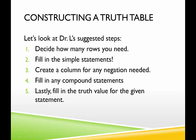If we have just one simple statement, p, we would need just two rows underneath the header — one for true and one for false. If we have two simple statements, p and q, we would need four rows for the four different possibilities. And if we have three different simple statements, there's a formula we can use to help determine this.